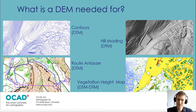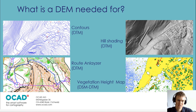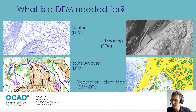In OCAD, you need a digital elevation model to run the route analyzer, so that the route analyzer can calculate the fastest route considering the height. When you have a digital surface model and the elevation model, you can subtract these two and get the difference, and with this difference you can visualize the vegetation.